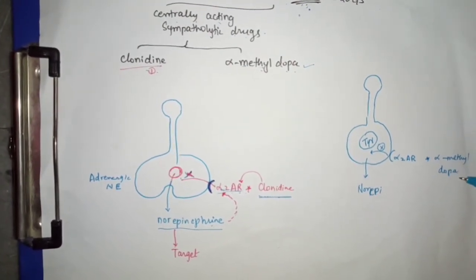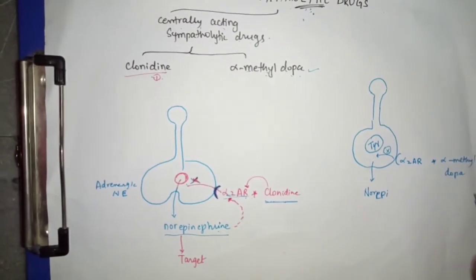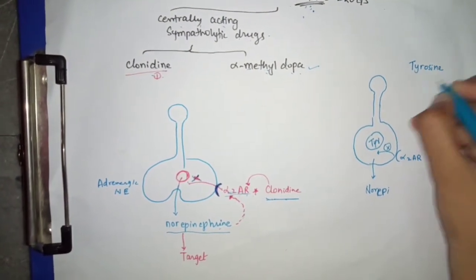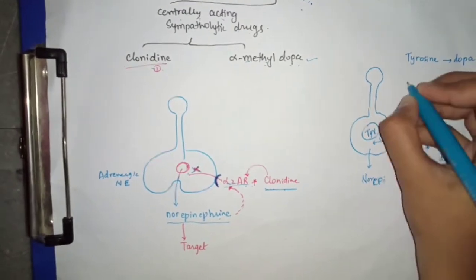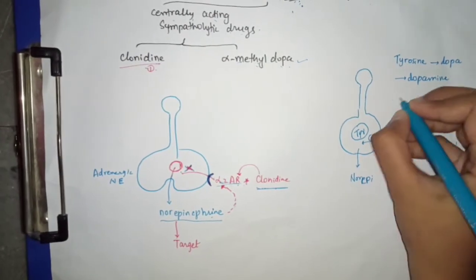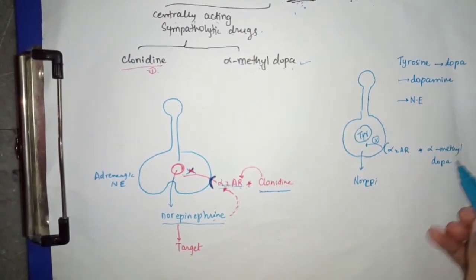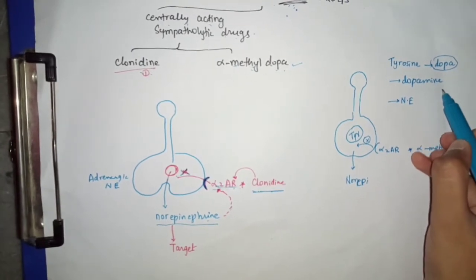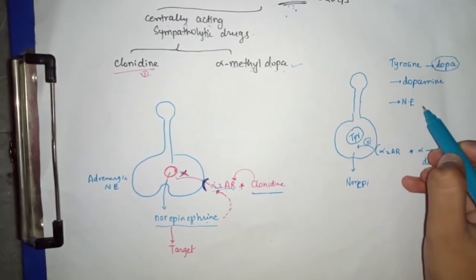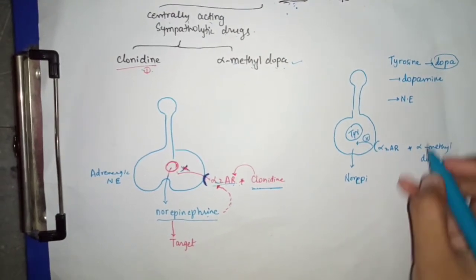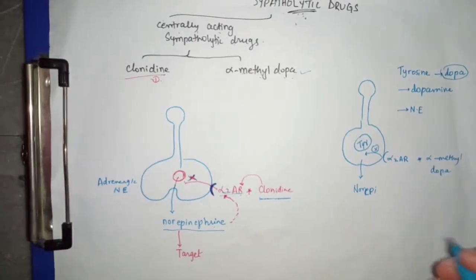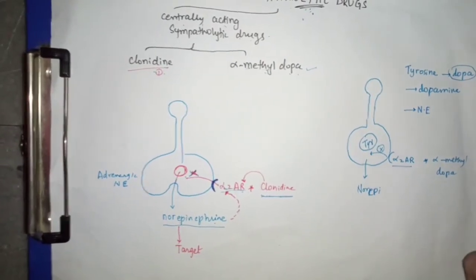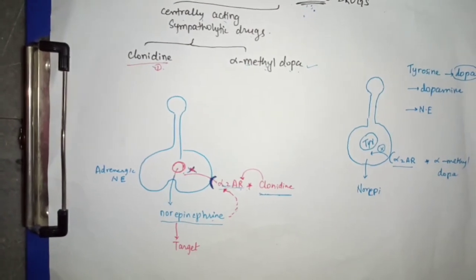Alpha methyl dopa, being a methylated form of dopa, takes the place of normal dopa in this pathway. As a result, alpha methyl dopamine is produced in place of normal dopamine, and alpha methyl norepinephrine is produced in place of normal norepinephrine. This alpha methyl norepinephrine is an even more powerful stimulator of the alpha-2 adrenergic receptor, leading to inhibition of norepinephrine release, reduced sympathetic outflow, and reduced blood pressure.